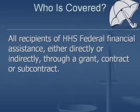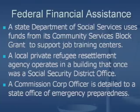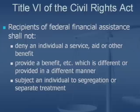Who is covered by the law? Who is obligated to comply? Any entity that receives money from the Department of Health and Human Services, either directly or indirectly, in the form of a grant, a loan, a contract, or a subcontract. For example, a State Department of Social Service may use Community Services block grant funds to support Job Training Centers. A local private refugee resettlement agency may operate in a building deeded over from a Social Security District office — as long as the agency holds that deed, that constitutes federal financial assistance. Similarly, a Public Health Service Commissioned Corps officer detailed to a State Office of Emergency Preparedness, whose salary and benefits are paid by the federal government, also constitutes federal financial assistance.